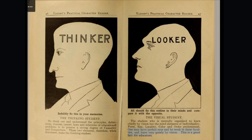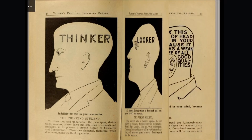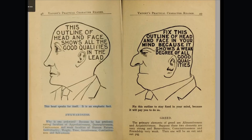This head speaks for itself — it is an emphatic fact. Awkwardness. Why awkward? Because he has predominant faculties of approbativeness and destructiveness, and weak faculties of human nature, individuality, weight, time, amativeness, combativeness, and self-esteem. Fix this outline firmly in your mind, because it will pay you to do so.